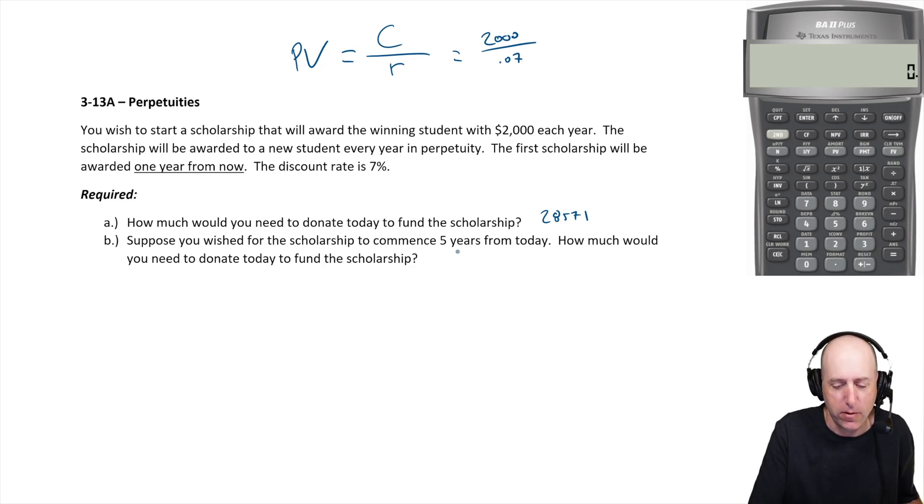And the first payout to be five years from today, it means you've got a discount. So it's the same formula. Let me read the question: suppose you wish for the scholarship to commence five years from today. How much would you need to donate today to fund the scholarship?